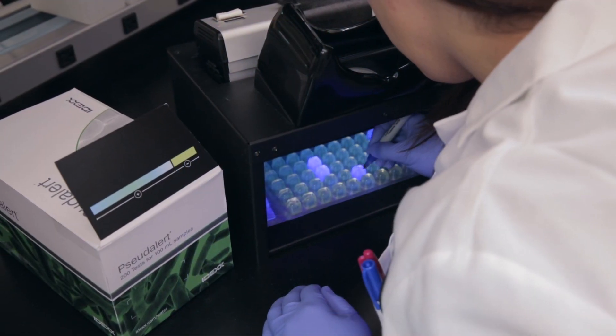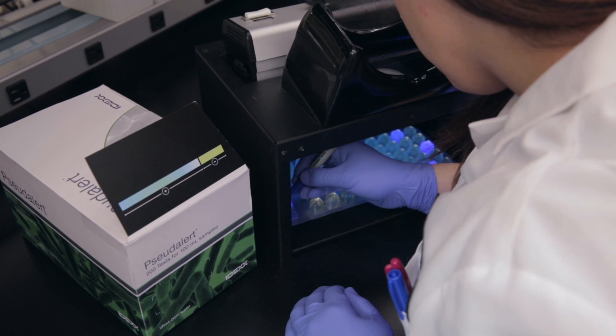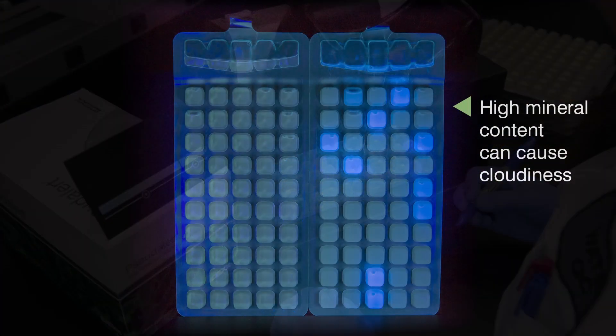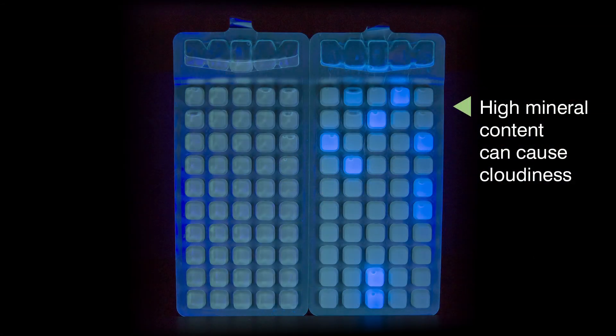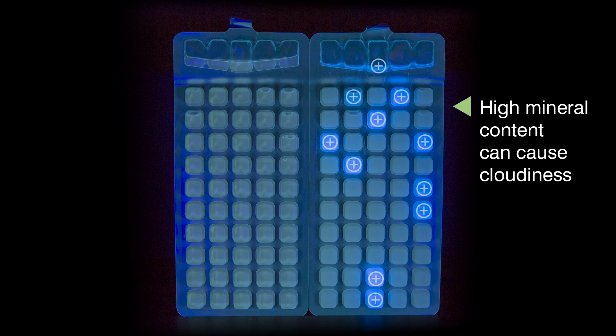Refer to the color chart on the Pseudalert box. Do not view the chart under UV light. High mineral content, especially magnesium or calcium, does not hinder detection, but can cause cloudiness and make the fluorescence appear whitish-blue, as shown here.